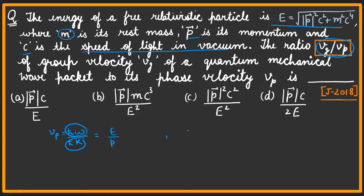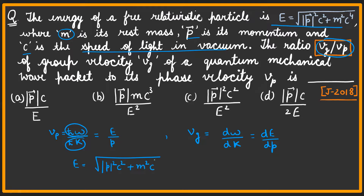Similarly, we can write group velocity as dω/dk, or it can be written as dE/dp. The energy is given as E = √(p²c² + m²c⁴).